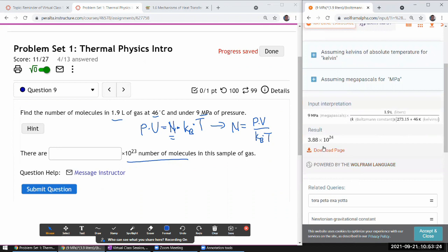With that, the number is 10 to the 24—oh, that's 10 to the 23. Moving one decimal place, it should be 38.8.